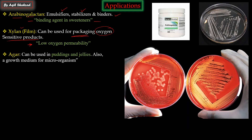Another type of hemicellulose is agar, which is used for making puddings and jellies. It is also used as a growth medium for microorganisms in labs - in petri dishes as you can see on the side, where bacterial colonies are grown with streaks. The medium and substratum present in these petri dishes is actually agar, which is a hemicellulose.